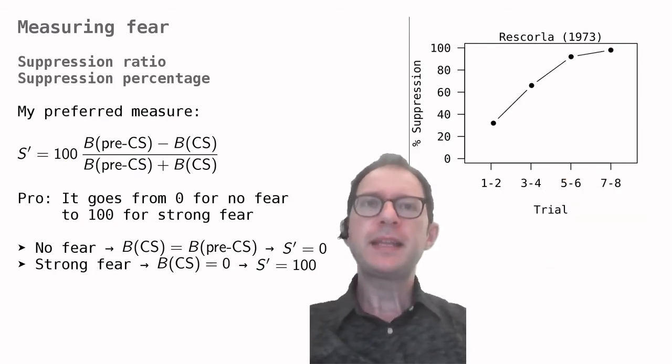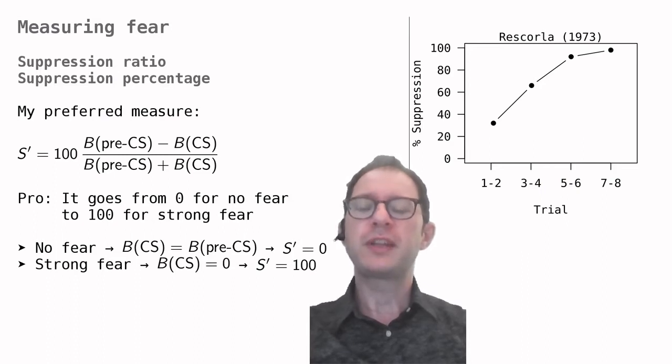These are the same data as before, but now plotted with a suppression percentage rather than with the suppression ratio. We can see that now our measure of learning is indeed increasing as the animal gets more afraid of the CS. I find this easier to understand, and I will use this measure whenever we talk about a fear conditioning experiment.